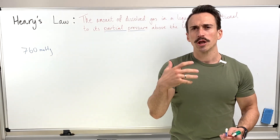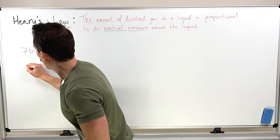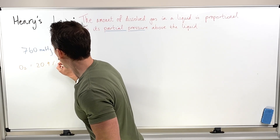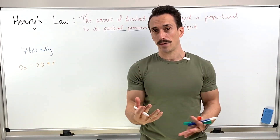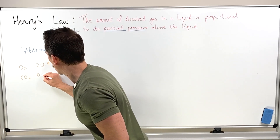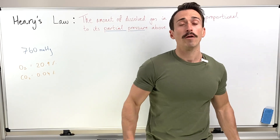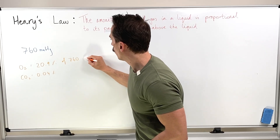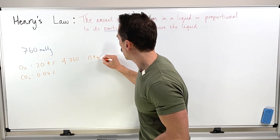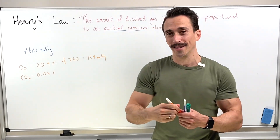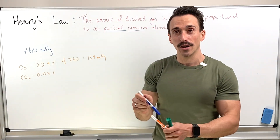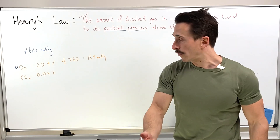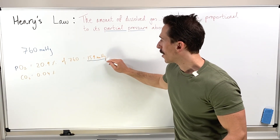If we focus on oxygen and carbon dioxide, oxygen makes up 20.9% of all the gases in the atmosphere. Taking 20.9% of 760 gives us 159 millimeters of mercury. So the partial pressure of oxygen in our atmosphere is 159 mmHg. You'll sometimes see it written as PO2 — that's the partial pressure of oxygen in our atmosphere: 159 millimeters of mercury.